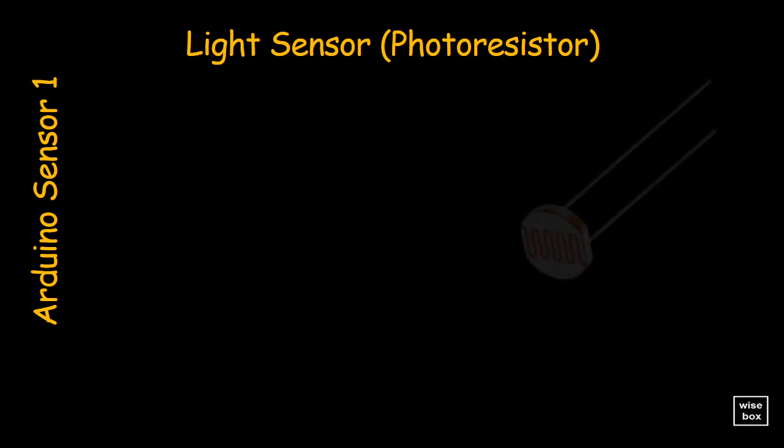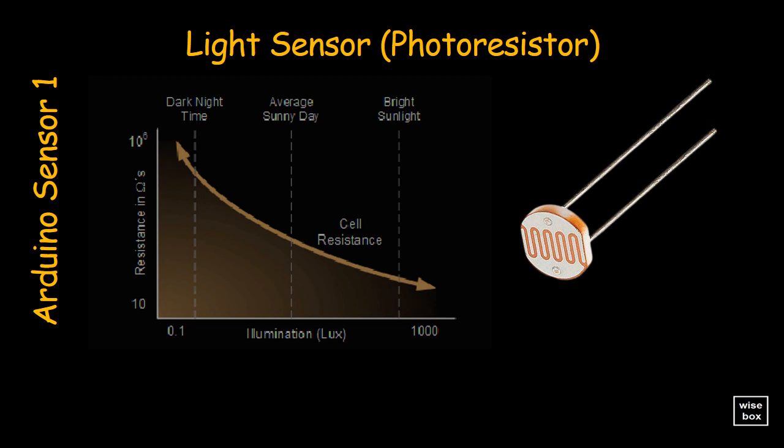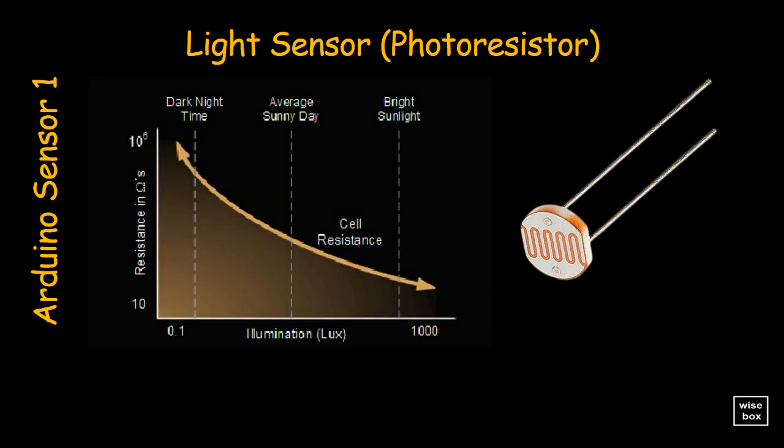Light sensors, or photoresistors, also known as light dependent resistors, are light sensitive devices most often used to indicate the presence or absence of light, or to measure the light intensity.